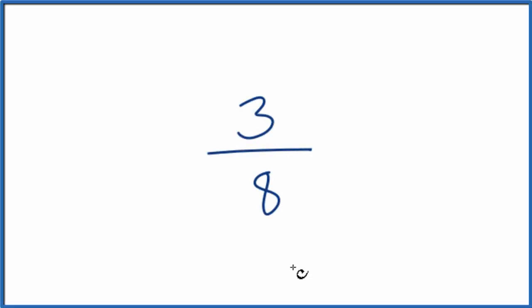Let's find three equivalent fractions for three eighths. That's three over eight. So we want to find three fractions that are the same as three eighths. They have the same value.